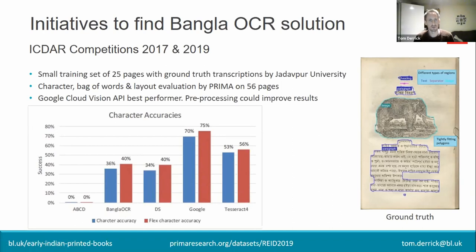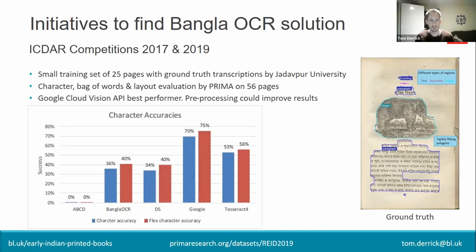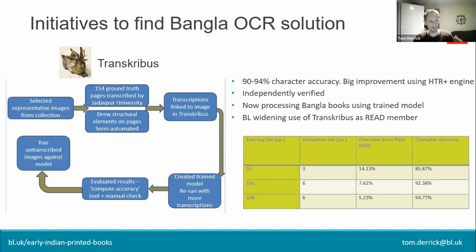It was very good practice to go through these competitions and we might enter again. One key takeaway is that all methods could probably do more to improve their pre-processing around robust binarization and creating training dictionaries to deal with historical texts — that could improve results with this type of archival material.